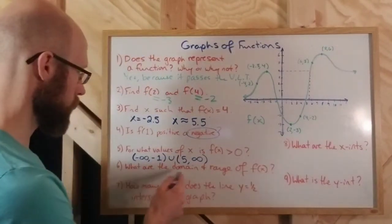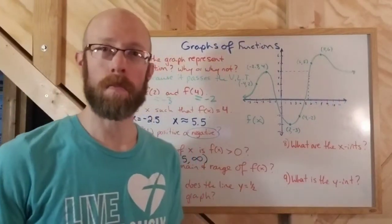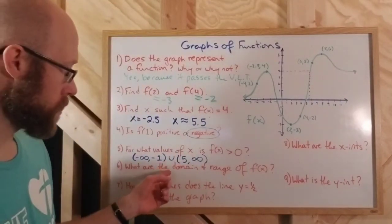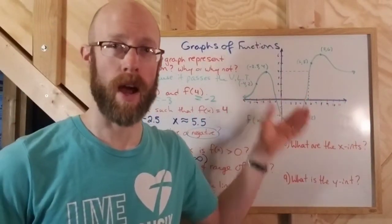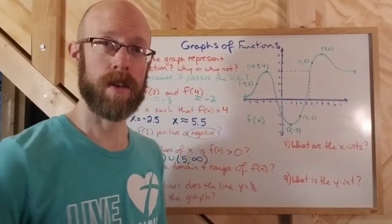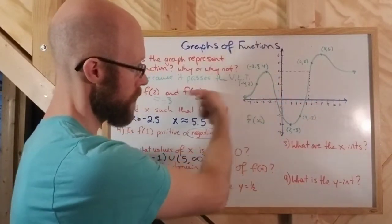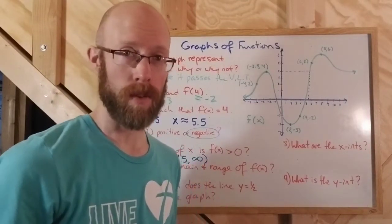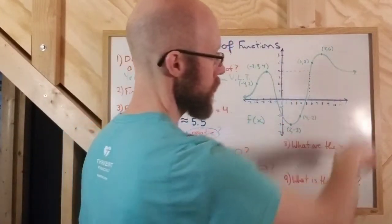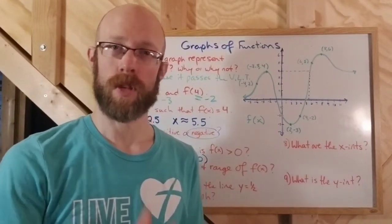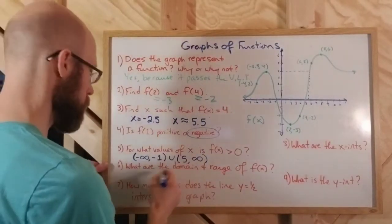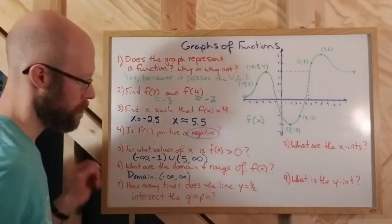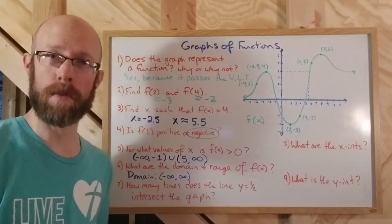What are the domain and range of f of x? The domain is the set of all inputs or independent variables — in our case, the x values. This graph covers every value of x; it covers the entire horizontal number line. The arrow on the left goes to negative infinity, and the arrow on the right goes on indefinitely to the right. So the domain is all real numbers, which I'll write as the interval from negative infinity to infinity.